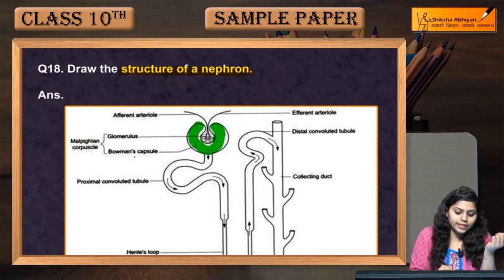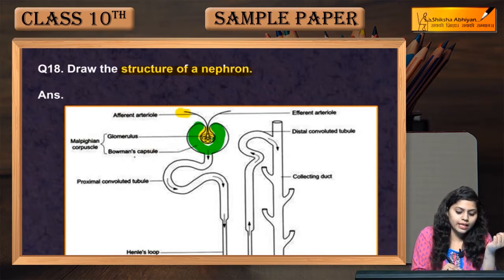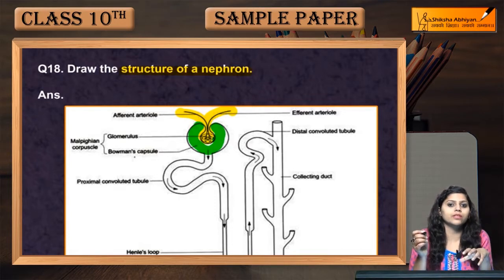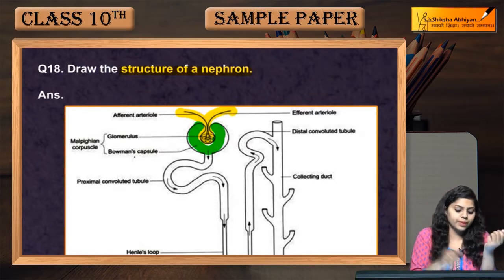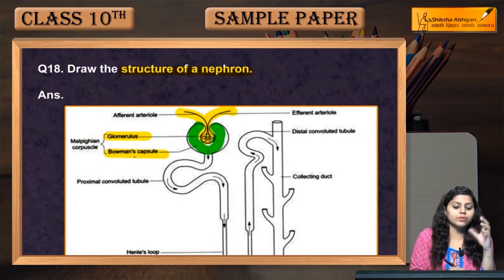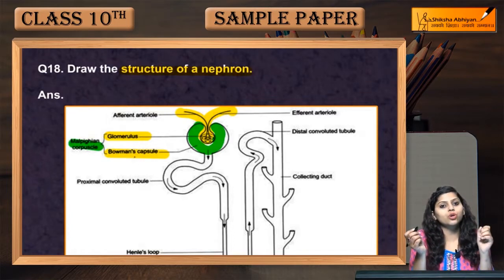The capsule's center is the glomerulus, which is formed by the afferent arteriole and efferent arteriole. We will draw the glomerulus and Bowman's capsule. The glomerulus and Bowman's capsule together form what is called the Malpighian corpuscle.